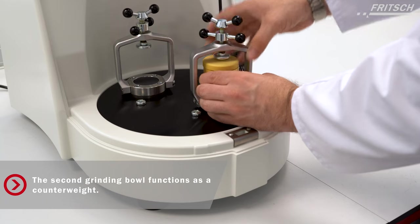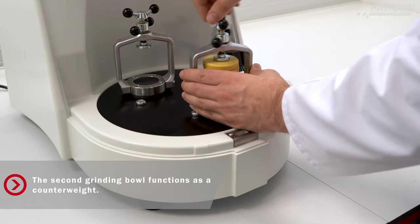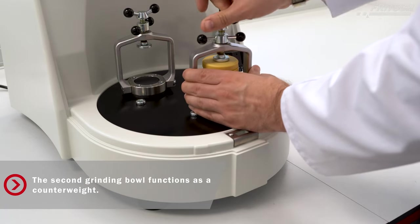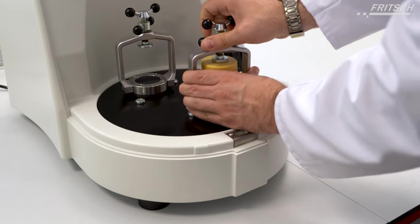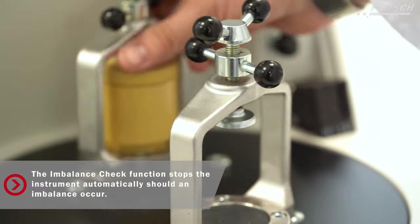When working with the Pulverisette 7 Classic line, make sure to put in two grinding bowls with the same weight. Otherwise, the instrument will rotate unbalanced and could be damaged.